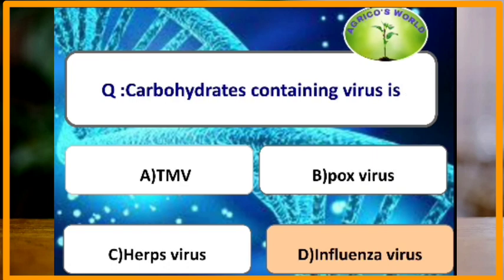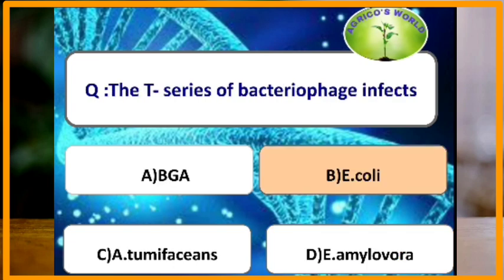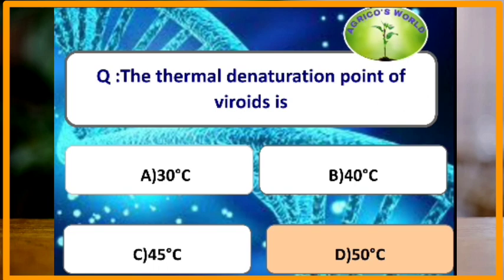The carbohydrate-containing virus is influenza virus. The T-series of bacteriophage infects E. coli. The thermal denaturation point of viroids is 50 degrees centigrade.